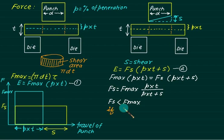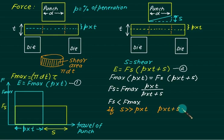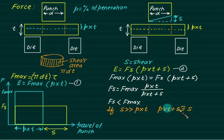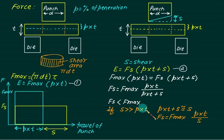If the shear S is very large compared to p×t, then (p·t + S) ≈ S. In that case, Fs = F_max × p × t / S. This simplified formula can be used for quick calculation.